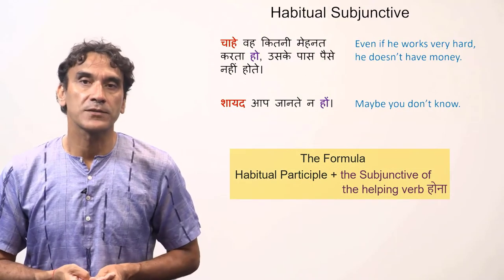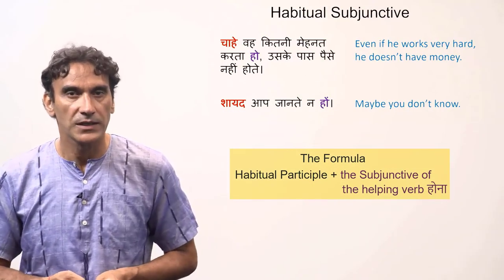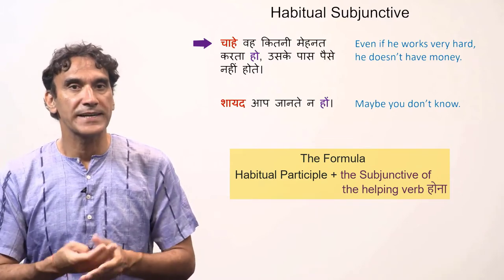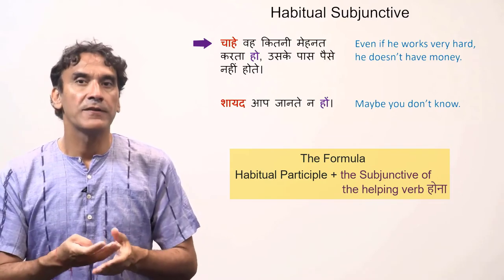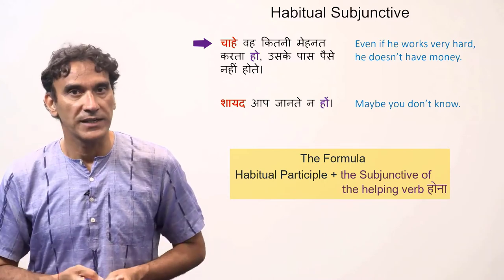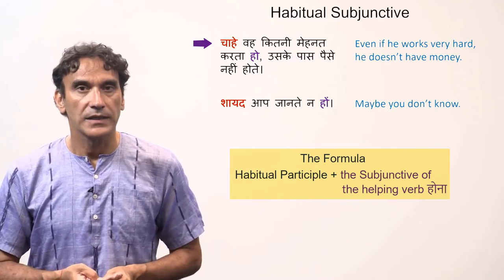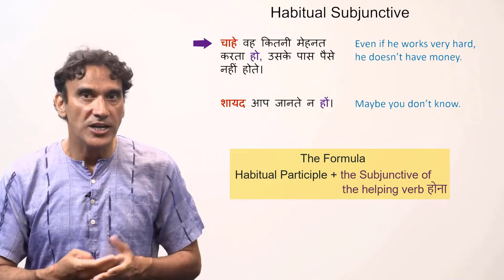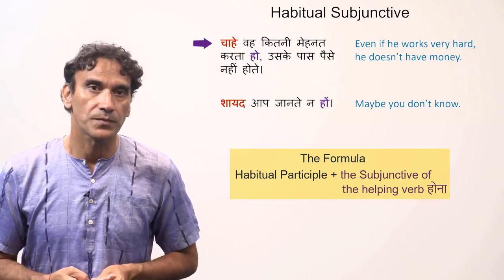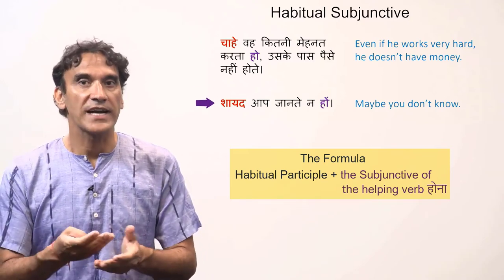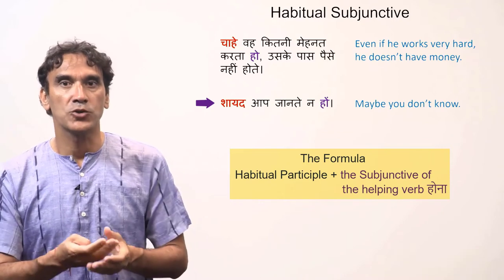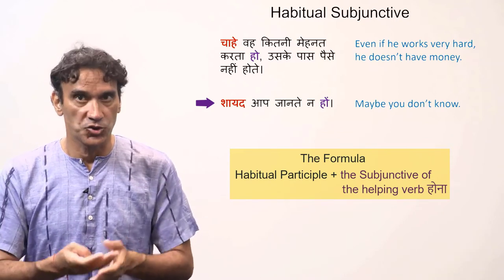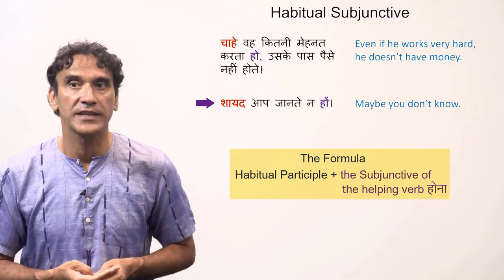First, let's take examples of the habitual subjunctive. 'Chahe wo kitni mehnat karta ho, uske paas paise nahi hote' — even if he works very hard, he does not have money. The first part of the sentence with 'even if' (chahe) is in the subjunctive: 'chahe wo kitni mehnat karta ho'. Another example: 'shayad aap jaante na hoon' — maybe you do not know. Always use the subjunctive after 'chahe', 'shayad', and 'mano'.